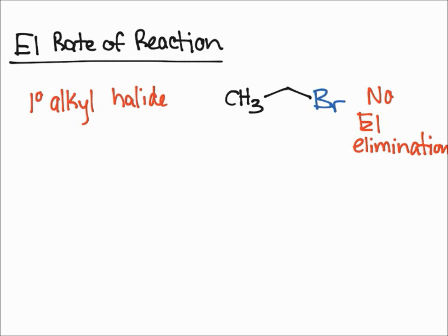If the bromine leaves what you end up with is a primary carbocation. As we've recalled, a primary carbocation is really bad and very unlikely to form.